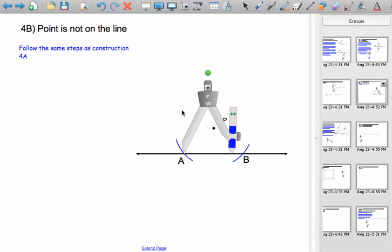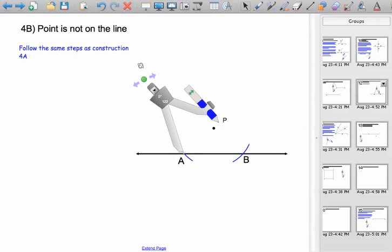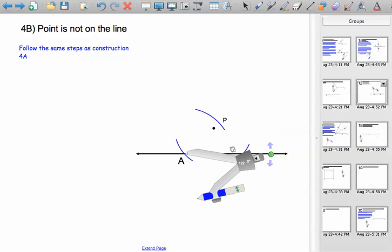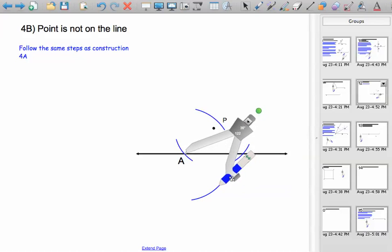Above the line, let's draw an arc from A, and do the same thing under the line. There's an arc.